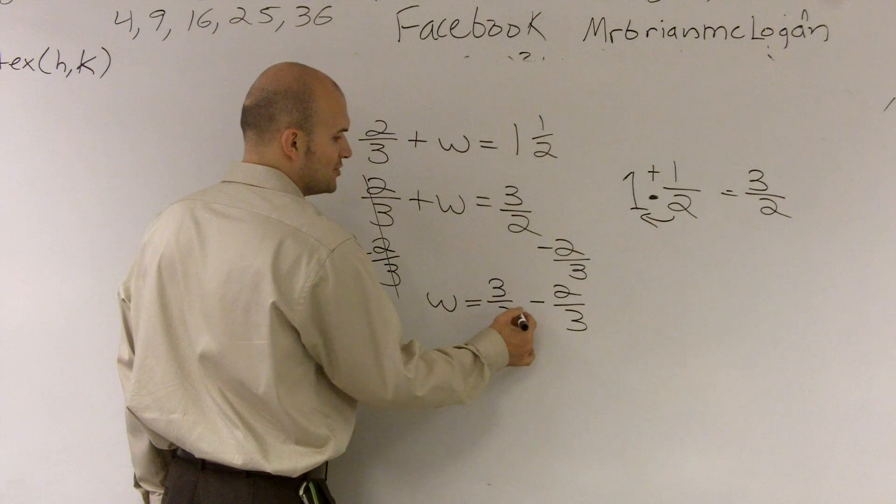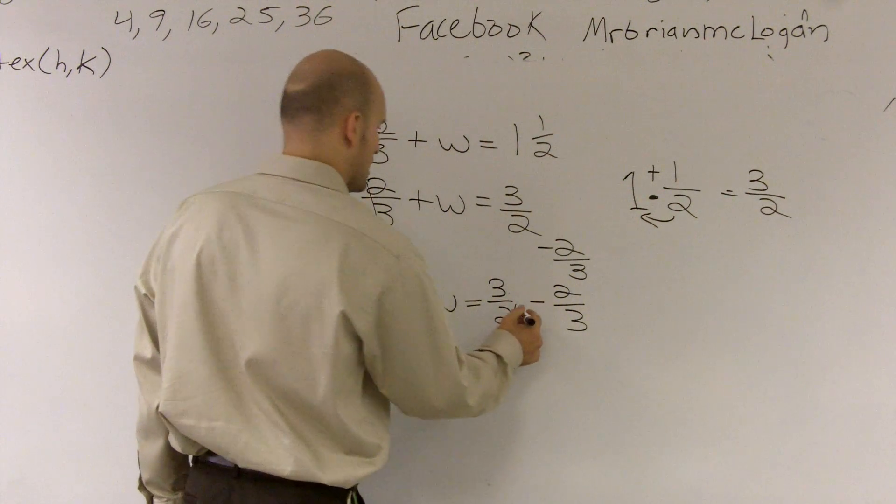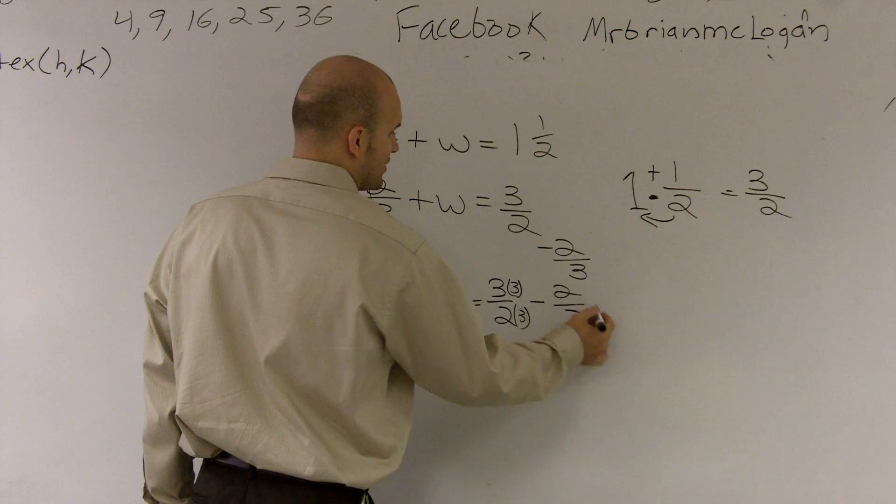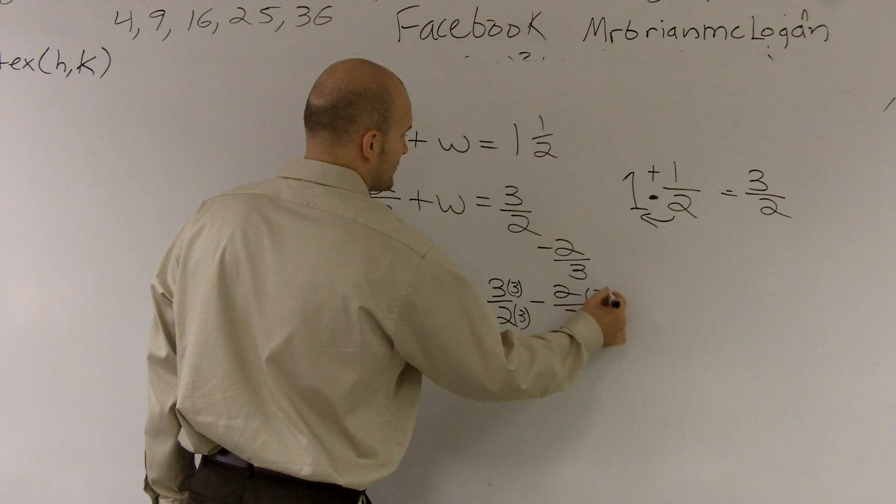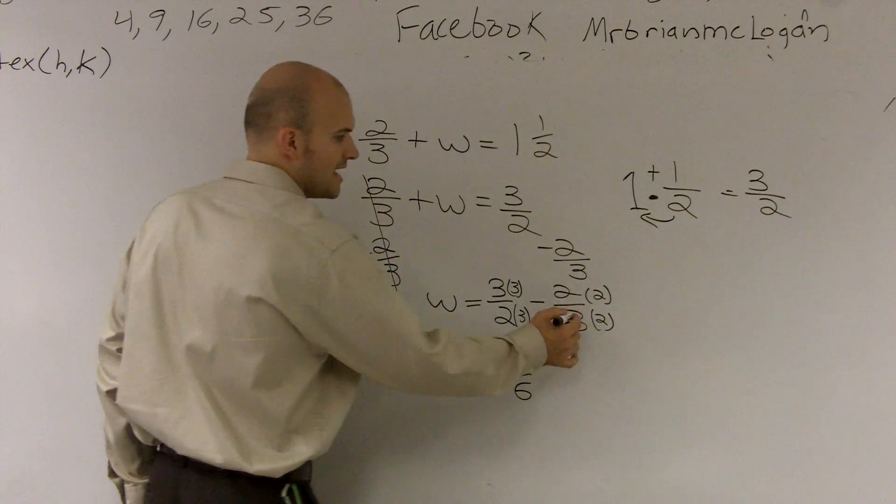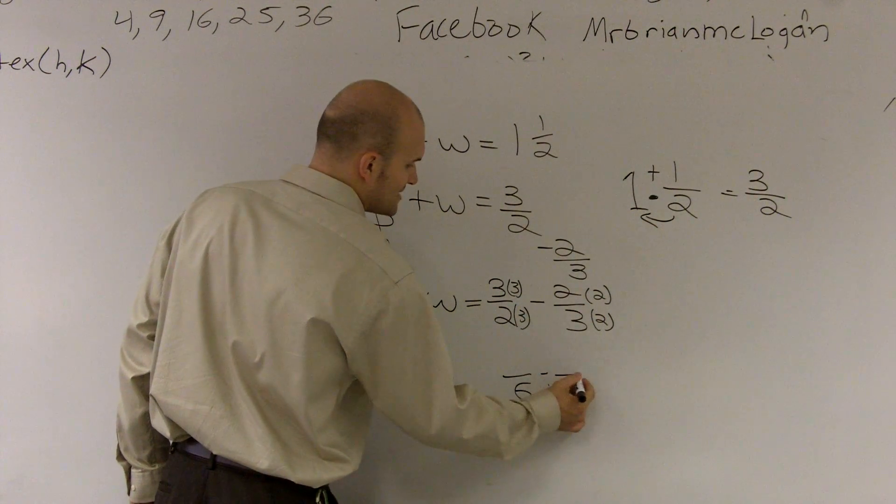So therefore I have to multiply 2 times 3 on the top and bottom. And 2 thirds and 3 times 2 on the top and bottom. And the reason why I do this is because 2 times 3 is going to give me 6. And 3 times 2 will give me 6.